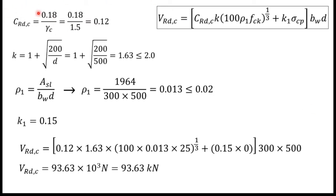Substituting values: CRdc equals 0.18/1.5 = 0.12. For K: d equals 500 mm, so K equals 1 + √(200/500) = 1.63. Since 1.63 is less than or equal to 2, K = 1.63 is acceptable.